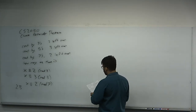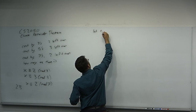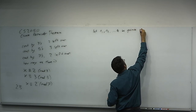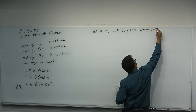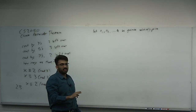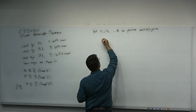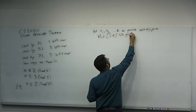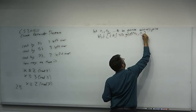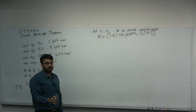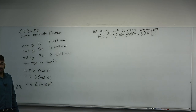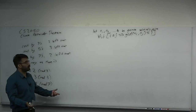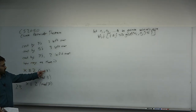Here's the formal statement of the Chinese Remainder Theorem. Let n1, n2, ..., nk be pairwise relatively prime. Pairwise relatively prime means for every pair of them, the GCD of every pair is 1. So for all i, for all j, if i does not equal j, then GCD(ni, nj) = 1. In our example, n1 through nk are just 3, 5, and 7 — we'll call those the moduli, and we require that they be pairwise relatively prime. Conveniently, 3, 5, and 7 are all prime.